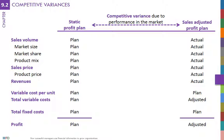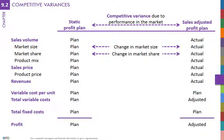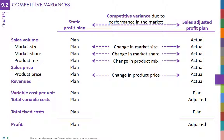These factors include market size — whether the market was larger or smaller than planned — market share, meaning whether the company captured a larger or smaller share than planned, product mix, meaning the mix of products sold was different from planned, and product price, meaning selling prices were different than planned.